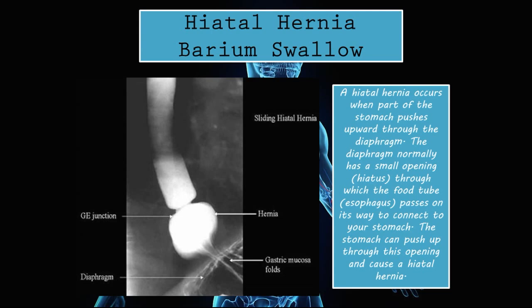Hiatal hernia on barium swallow: a hiatal hernia occurs when part of the stomach pushes upward through the diaphragm. The diaphragm normally has a small opening called the hiatus through which the esophagus passes on its way to connect to the stomach. In a hiatal hernia, the stomach pushes up through this hiatus into the thoracic cavity, above where it normally sits below the diaphragm.